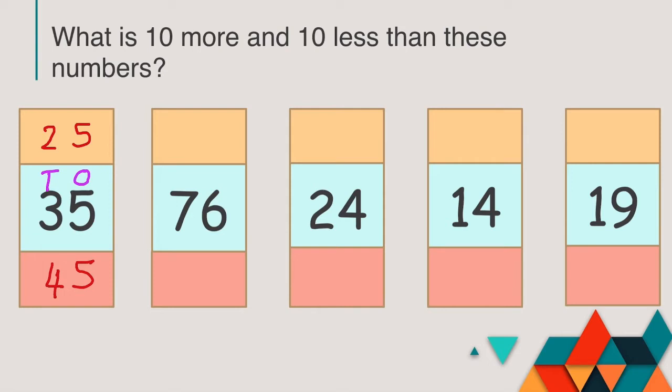In 76, we have 7 tens and 6 ones. Keep your ones digit the same and only change your tens digit. 10 more than 76 is 86 and 10 less than 76 is 66.